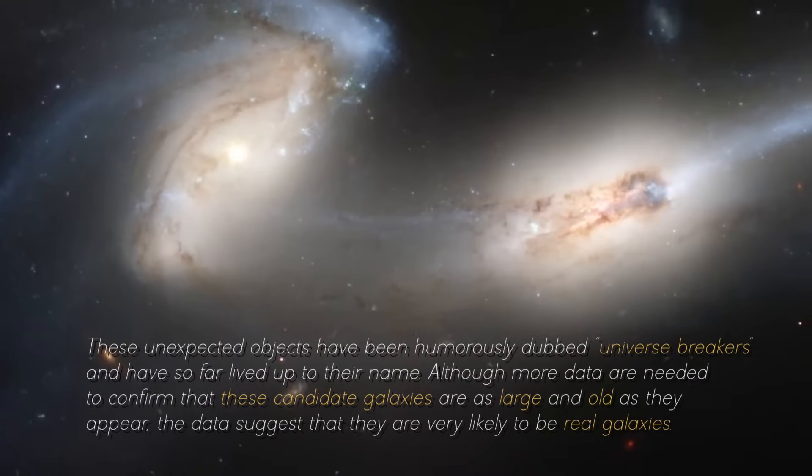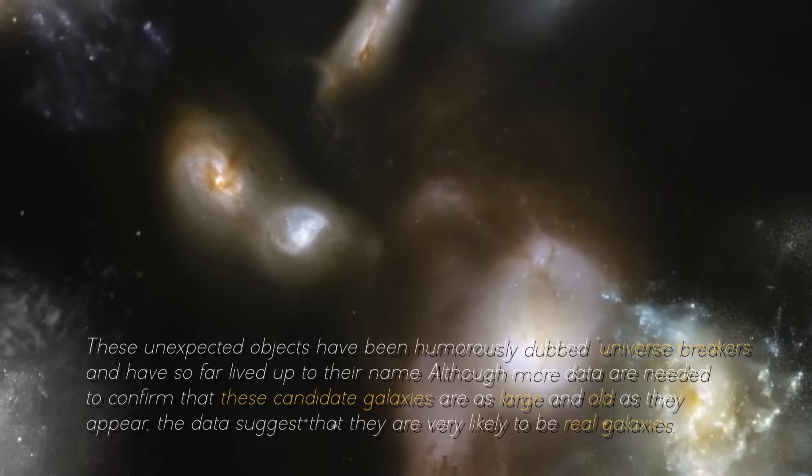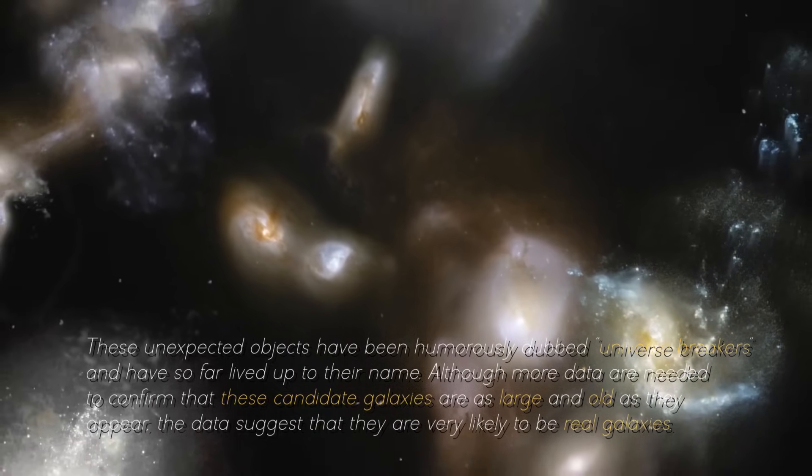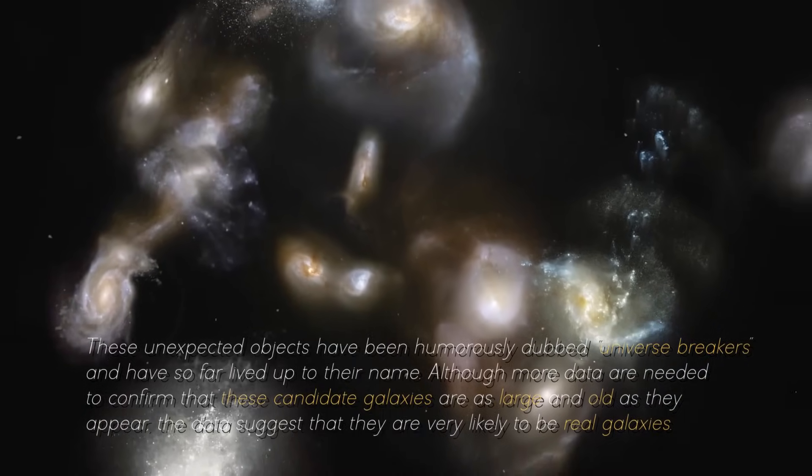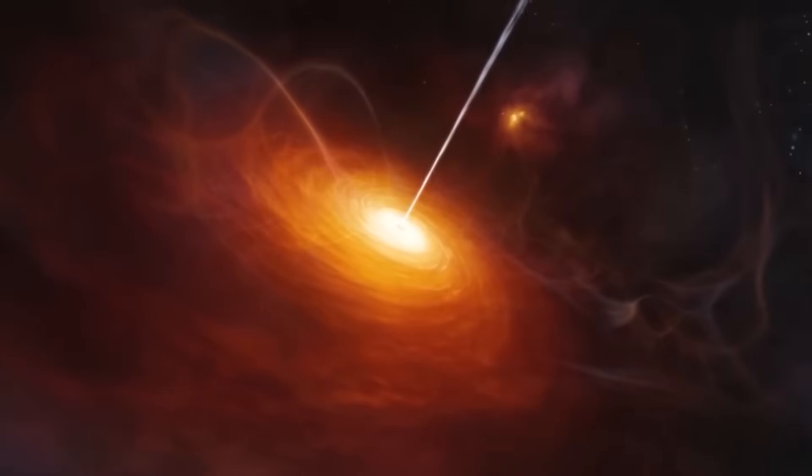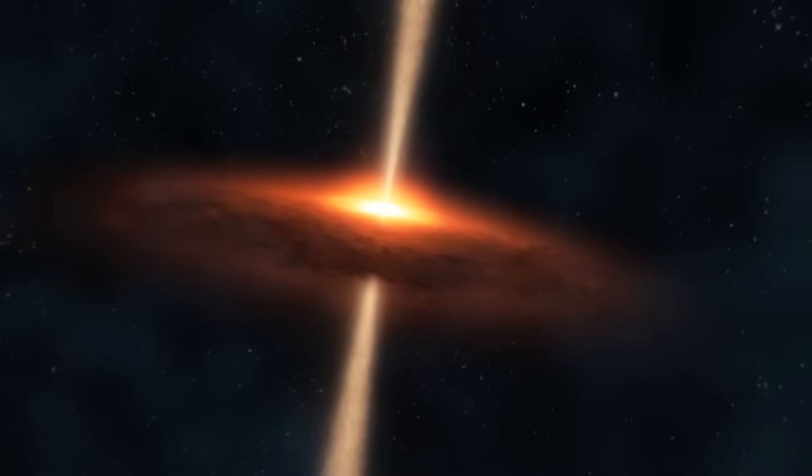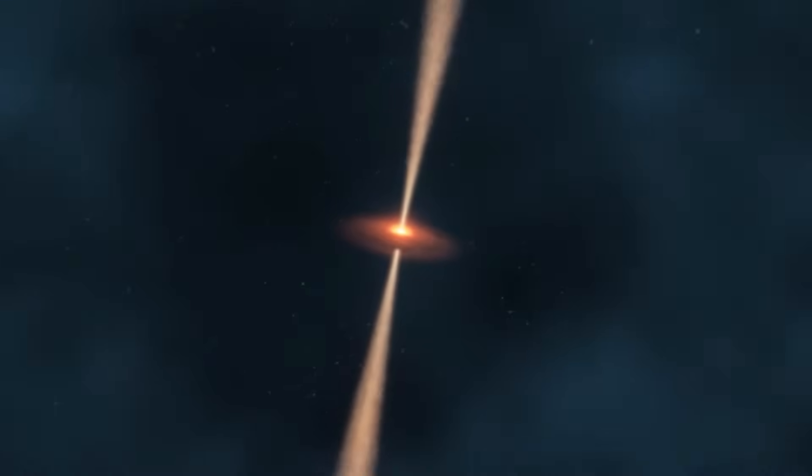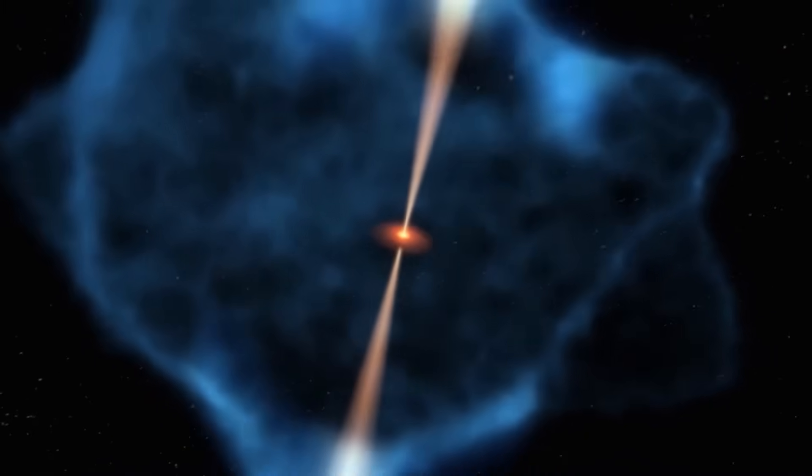These unexpected objects have been humorously dubbed universe breakers and have so far lived up to their name. Although more data are needed to confirm that these candidate galaxies are as large and old as they appear, the data suggests that they are very likely to be real galaxies. There is the possibility that some of these objects are obscured supermassive black holes, which is another interesting aspect to consider. However, the amount of mass discovered implies that the known mass of stars at this stage of the universe is up to 100 times larger than previously thought.